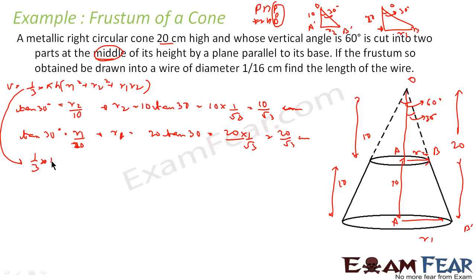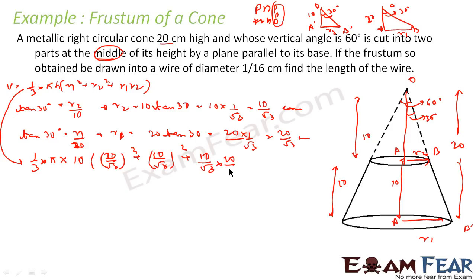Substituting into the formula: Volume = (1/3) × π × 10 × [(20/√3)² + (10/√3)² + (10/√3)(20/√3)]. Solving this gives the volume of the frustum as 22,000/9 cubic centimeters.